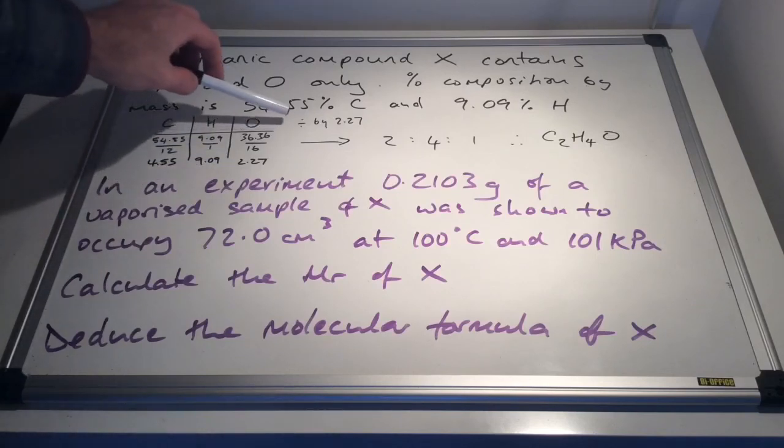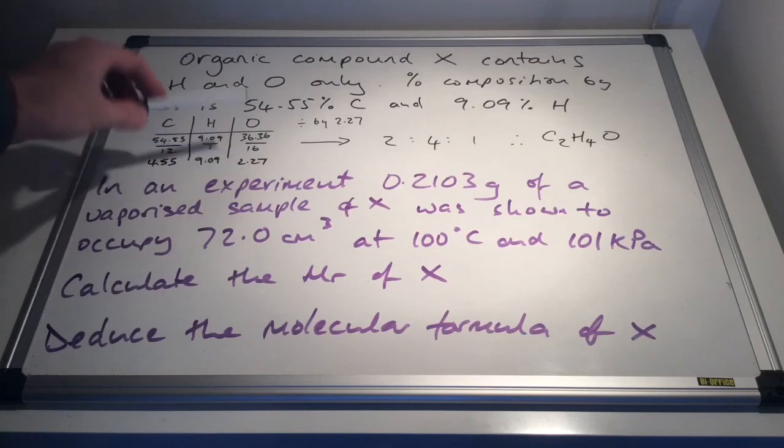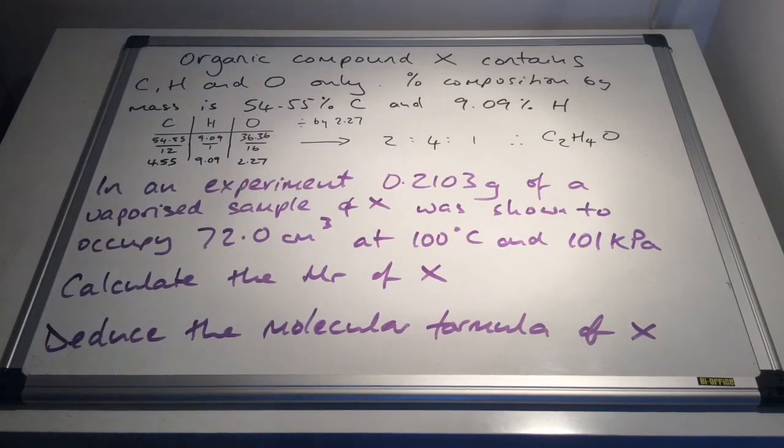So if we divide all of those by the smallest, which is 2.27, we get a ratio of carbon to hydrogen to oxygen of 2 to 4 to 1. And so the empirical formula for this organic compound X is C2H4O.